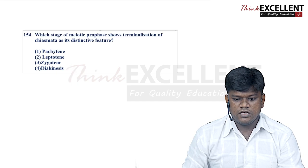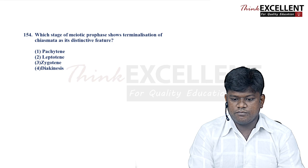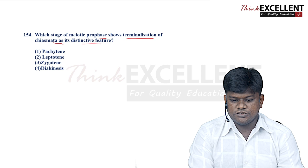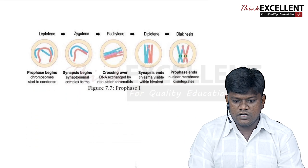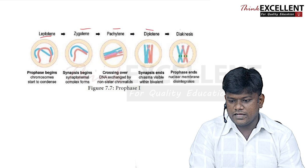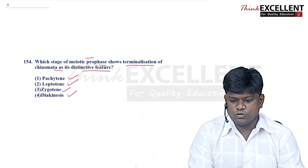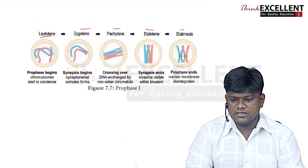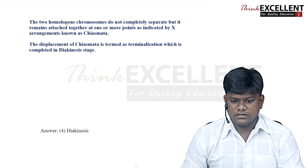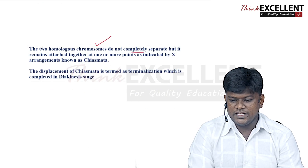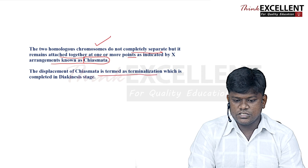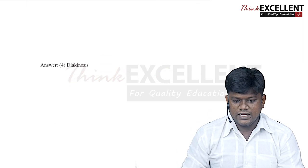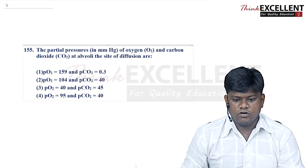Question 154: which stage of meiotic prophase shows terminalization of chiasmata as its distinctive feature? The options are pachytene, leptotene, zygotene, and diakinesis. In prophase I, we discuss leptotene, zygotene, pachytene, diplotene, and diakinesis. During diakinesis, two homologous chromosomes do not completely separate but remain attached — this arrangement is chiasmata. Terminalization of chiasmata occurs at diakinesis, so option 4 is the right answer.